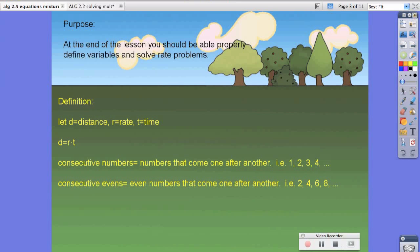Consecutive evens are even numbers that come one after another. For example, 2, 4, 6, and 8.